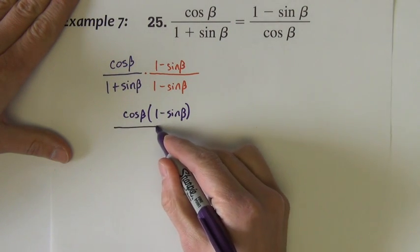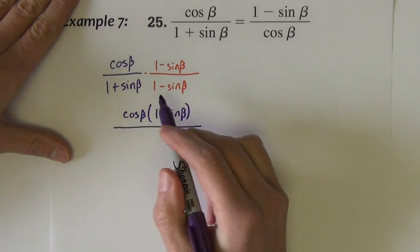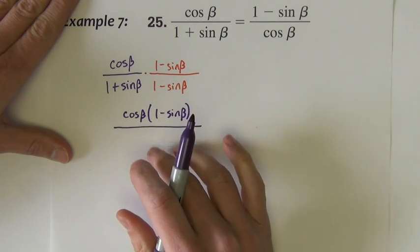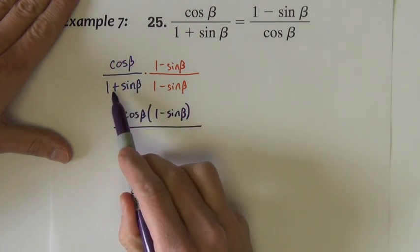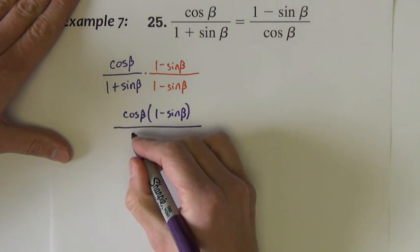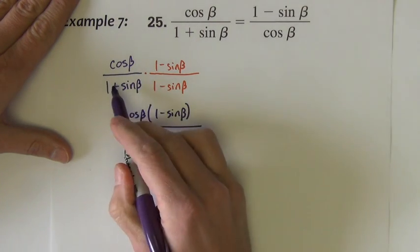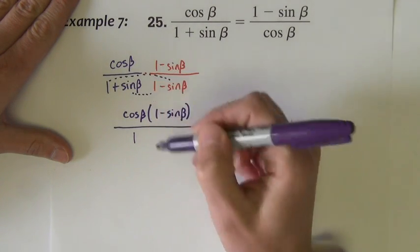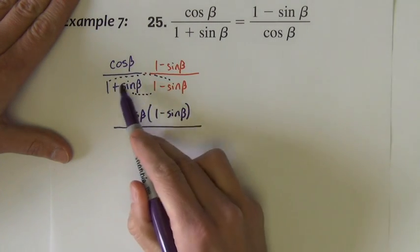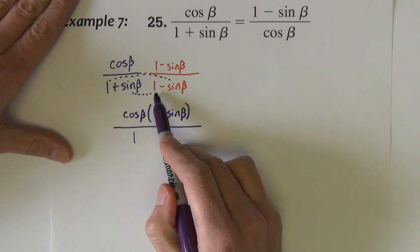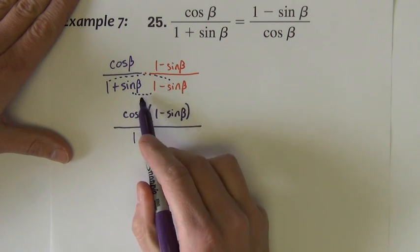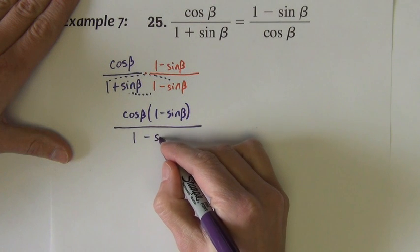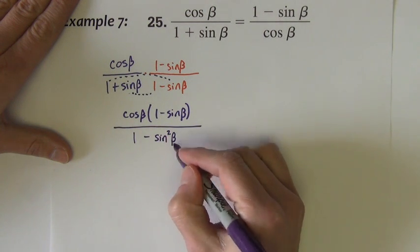In the denominator, I'm going to go ahead and FOIL, but I'm going to shortcut it. I'm going to take out some of the simplifying, because we've seen it a few times already. 1 times 1 is 1. Notice that the outside product and the inside product, it's going to be a negative sign, a positive sign, and they're going to add to zero and cancel out. So I'm just going to grab the last term to the last term. It's negative sine squared beta.